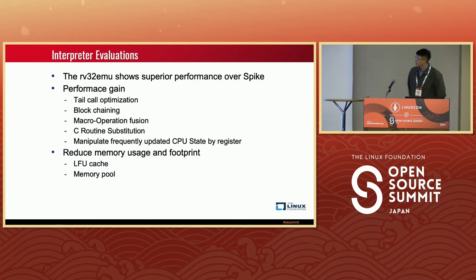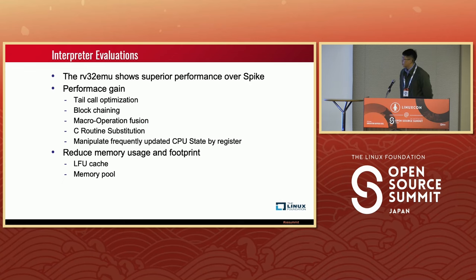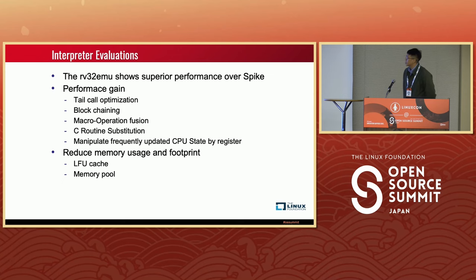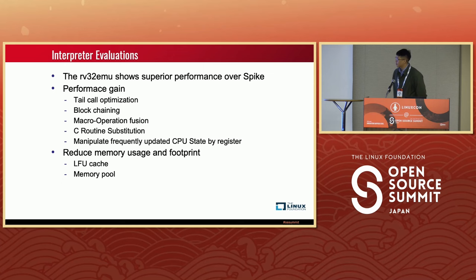In summary, our interpreter outperforms Spike. To improve performance, we apply tail call optimization, block chaining, macro operation fusion, C-routine substitution, and manipulation of frequently updated CPU state by register. For reducing memory usage and footprint, we introduce an LFU cache and memory pool.